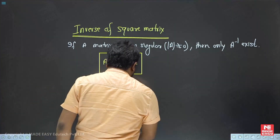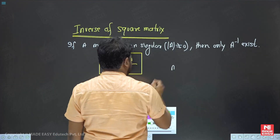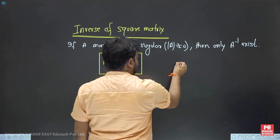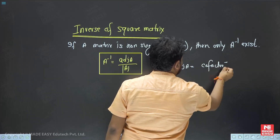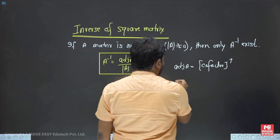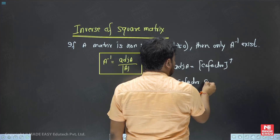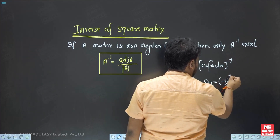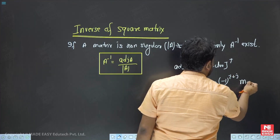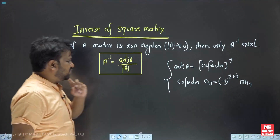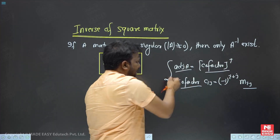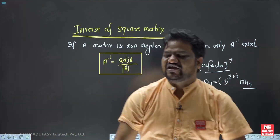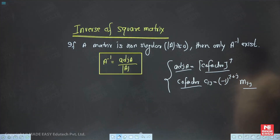To find A inverse, we have to calculate the adjoint of A. The adjoint of A equals the cofactor transpose. The cofactor C_ij equals minus one to the power i plus j, multiplied by M_ij. So to find A inverse: first find the minor, then the cofactor, then take the transpose of the cofactor to get adjoint A, then divide by the determinant of A. Finding A inverse of a matrix is a difficult task.